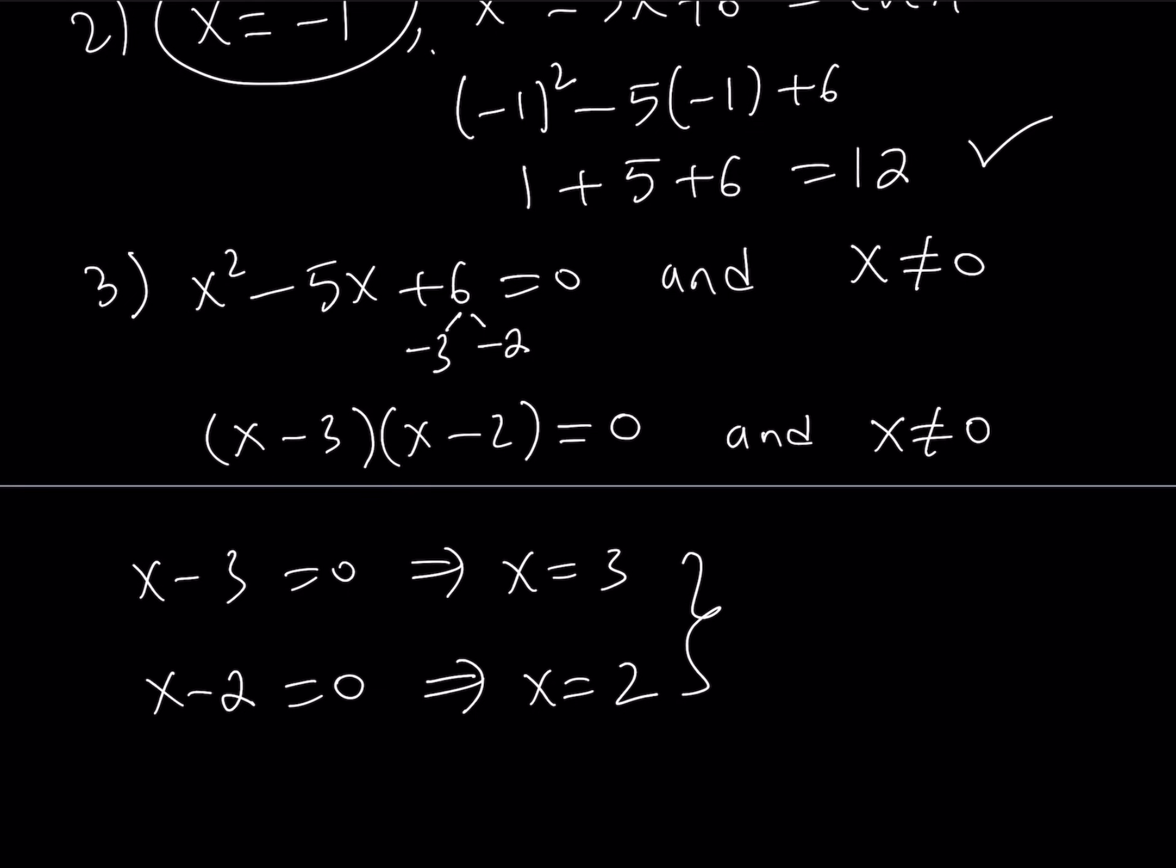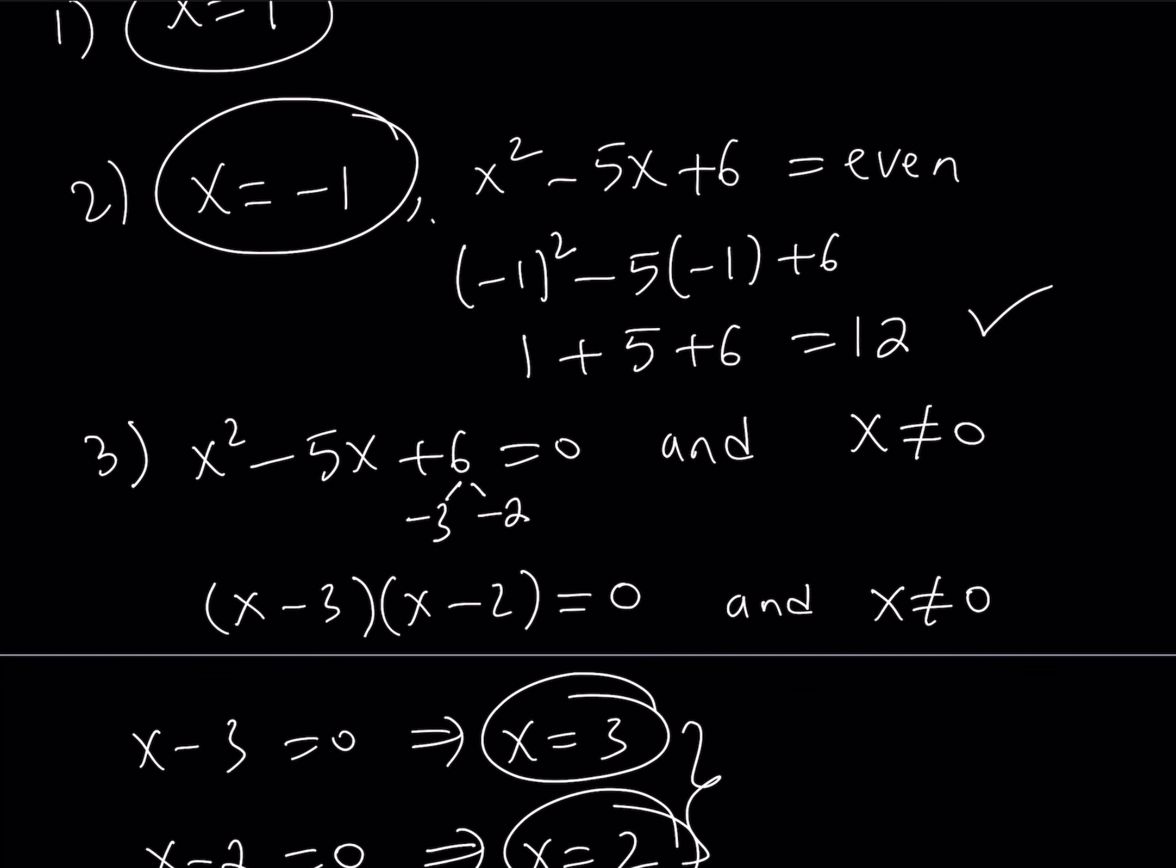Therefore, they are valid solutions as well, right? Because they don't make the base 0, so they are good. So x equals 3 is a possible solution. x equals 2 is also a possible solution.